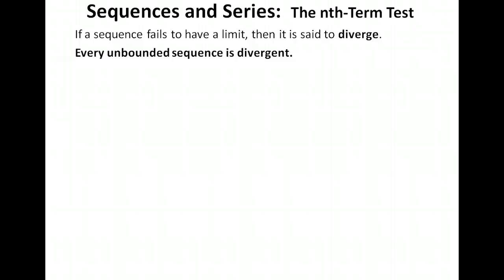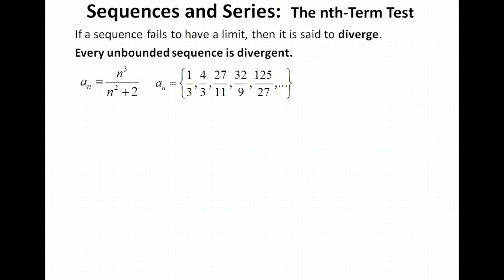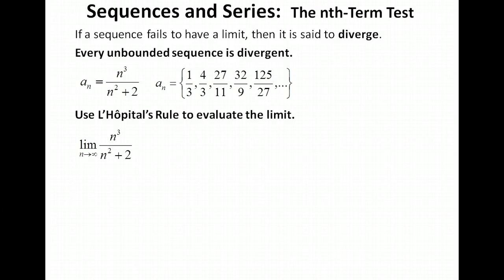Let's look at another example — this one's not arithmetic. We have the formula n³ over (n² + 2) that represents our sequence. Plugging in 1 we get 1/3, plugging in 2 we get 8/6, or 4/3 in lowest terms, then 27/11, and so on. We can't tell too well what's happening, so let's use L'Hôpital's rule to evaluate the limit by taking the derivative of the numerator and denominator.